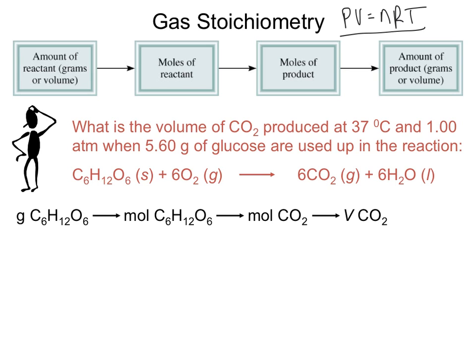Let's look at a practice problem. It says: what is the volume of CO2 that is produced at 37 degrees C and 1 atm when 5.60 grams of glucose are used up in the reaction? We've been provided a balanced equation, but if you were not given one, you need to write one and make sure it's balanced with all coefficients properly written. Before we get started, let's look at how we know this is going to be a gas stoichiometry problem.